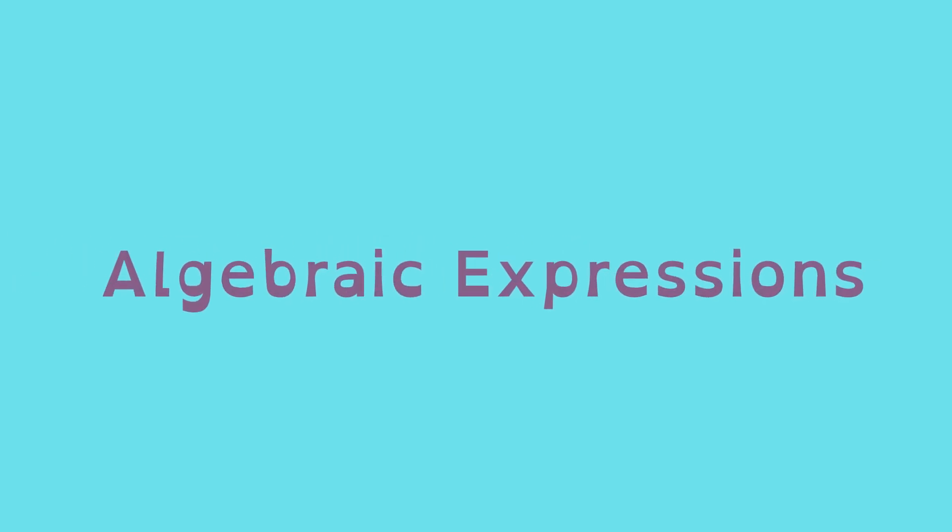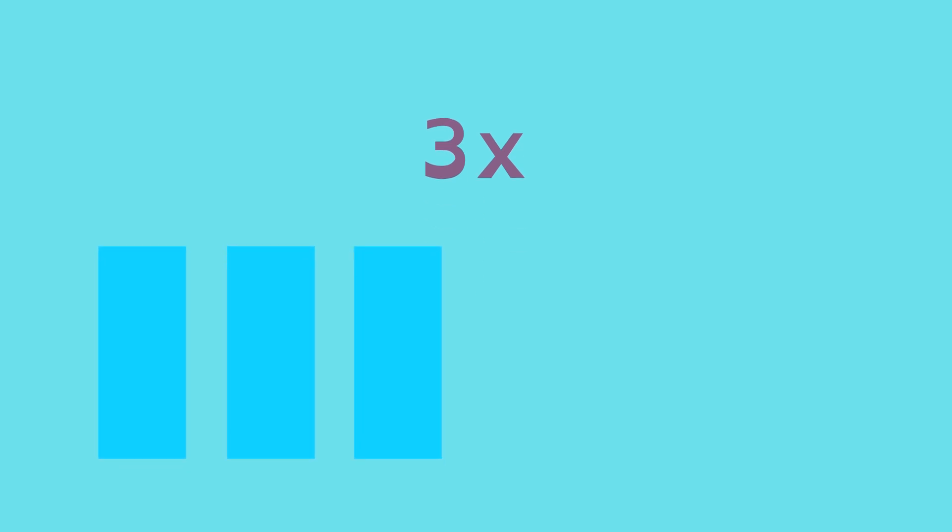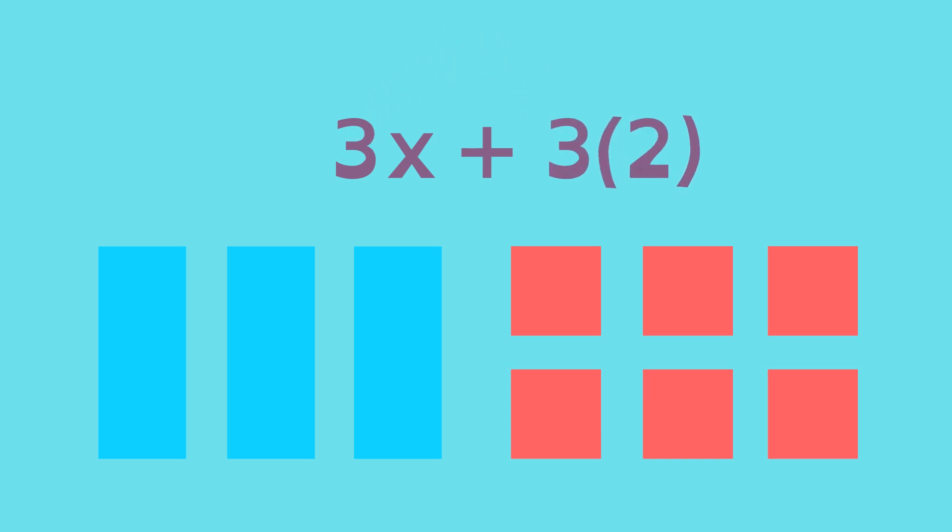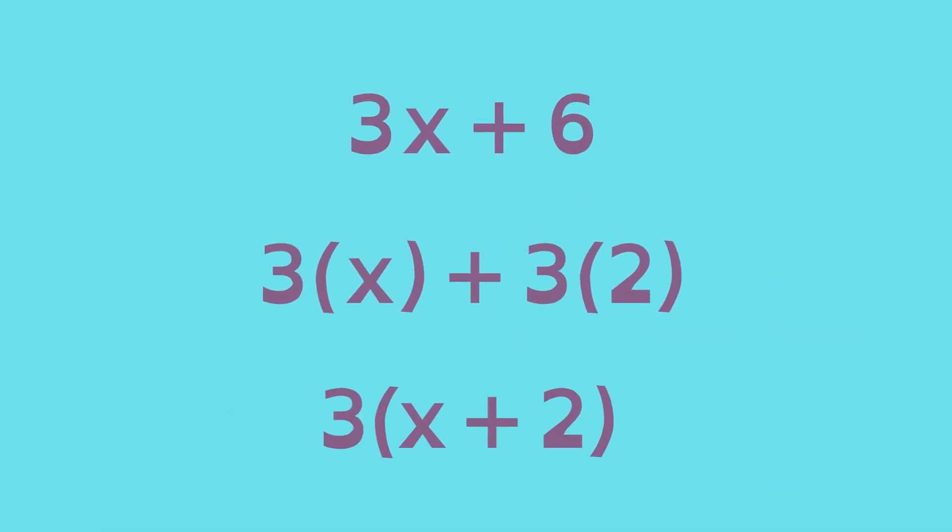The Distributive Property works with Algebra too. Here we have 3 times x. We don't know what x is, but we know that there are 3 groups of them. Let's add 6 of something else, represented as 3 groups of 2. The arrangement can be expressed like this, or like this. All 3 of these expressions are equivalent.